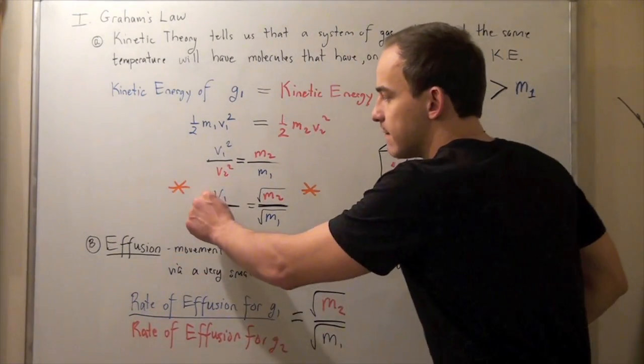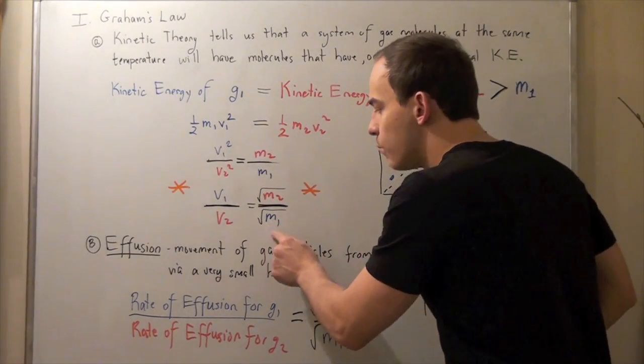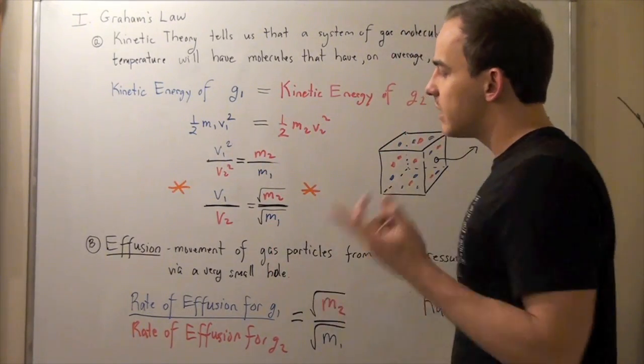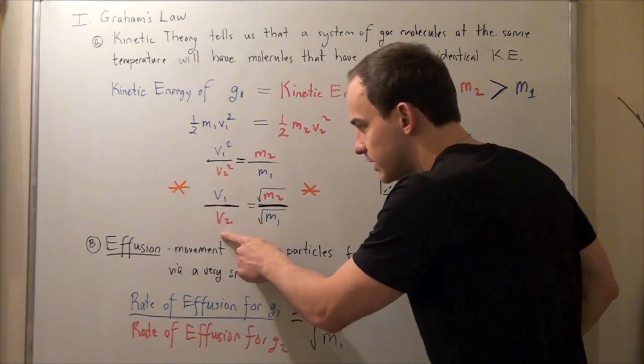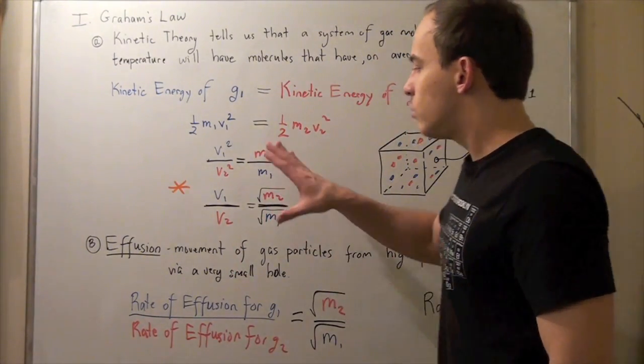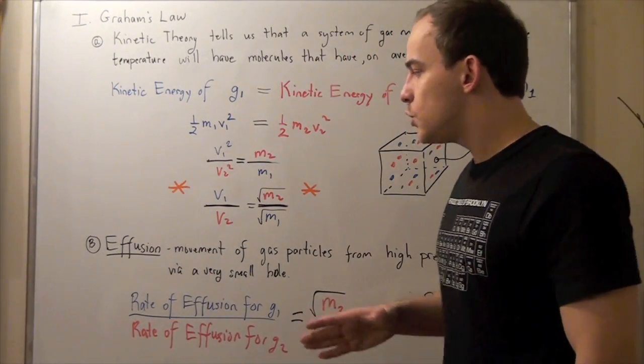Notice that velocity 1 will be greater if m1 is smaller. And likewise, velocity 2 will be greater if m2 is smaller. And we'll see that more clearly in the process of effusion.